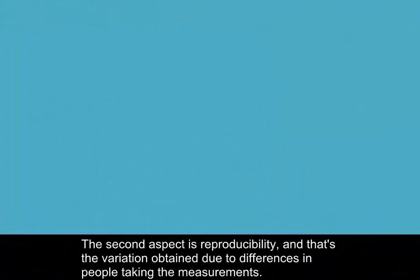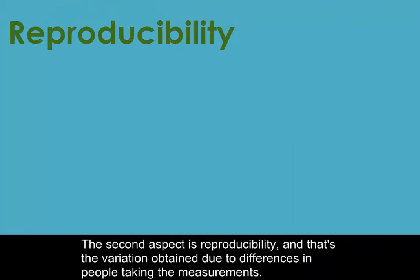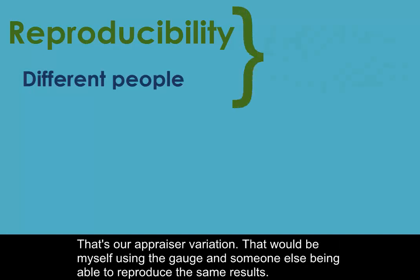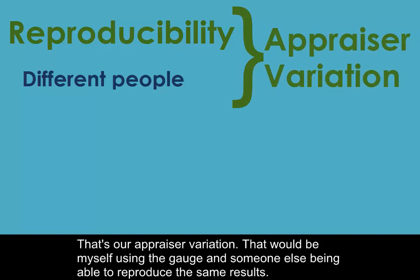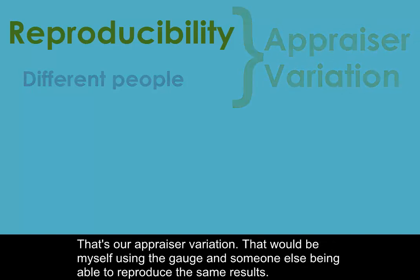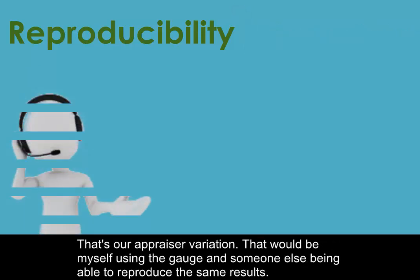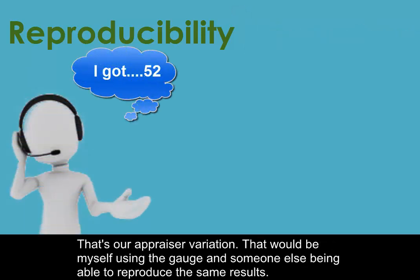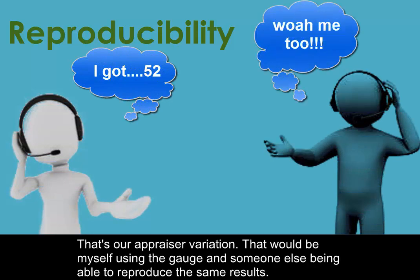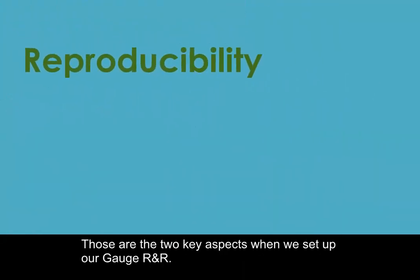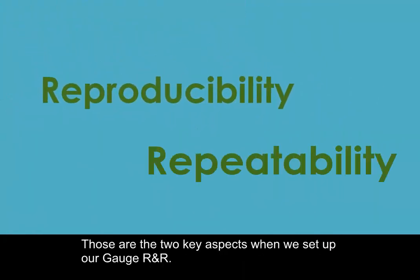The second aspect is reproducibility — the variation obtained due to differences in the people taking the measurements, which is our appraiser variation. That would be myself using the gauge and someone else being able to reproduce the same results. Those are the two key aspects when we set up our gauge R&R.